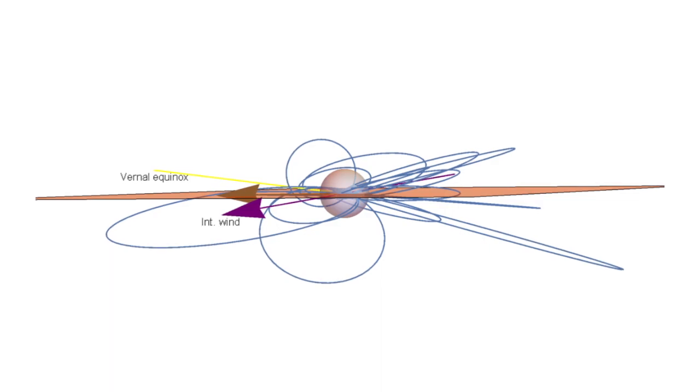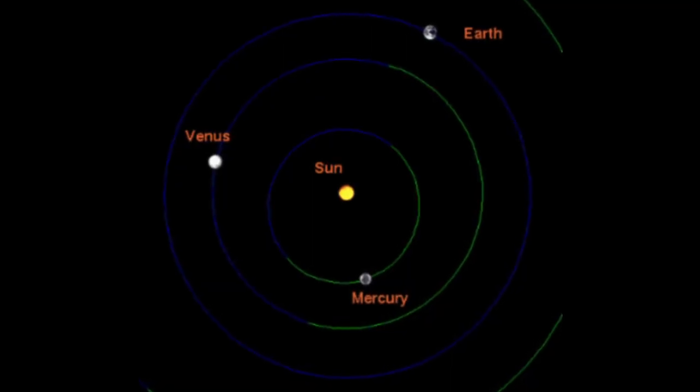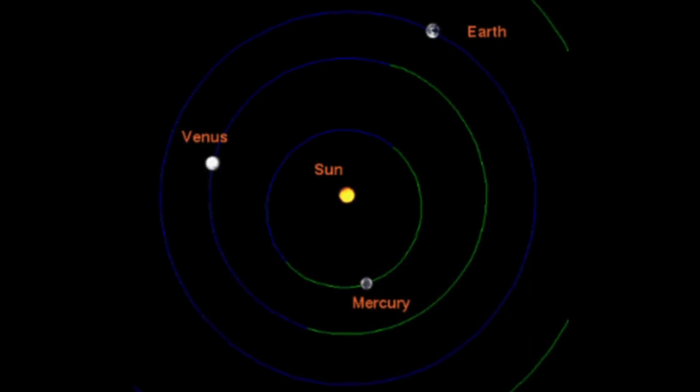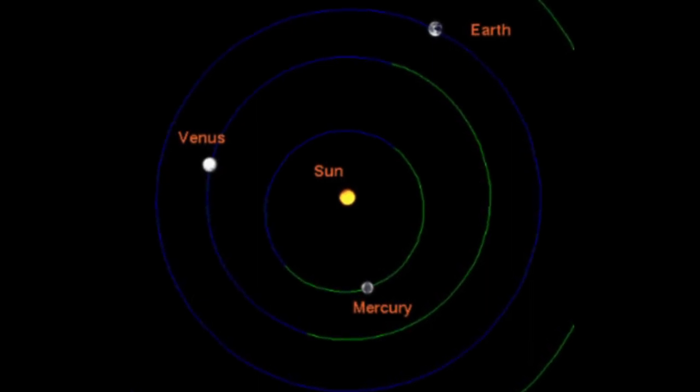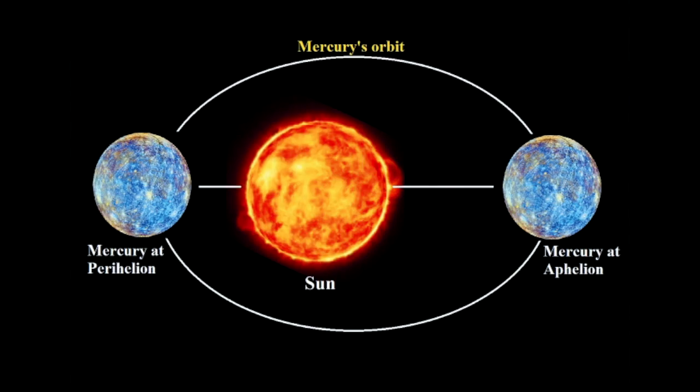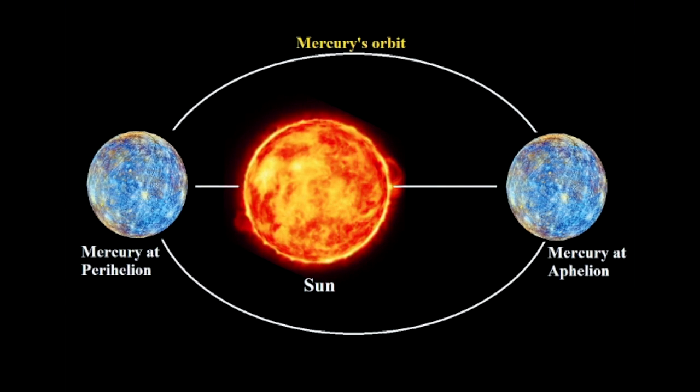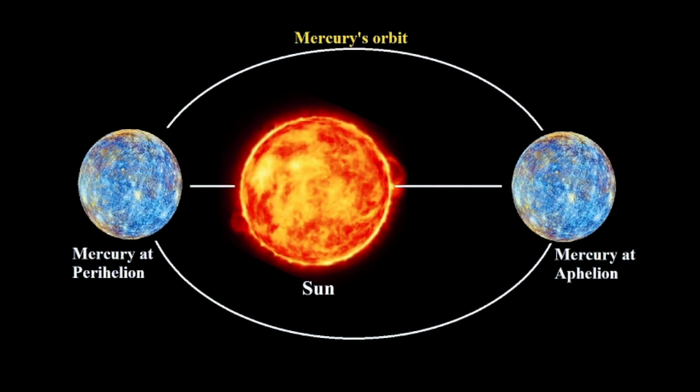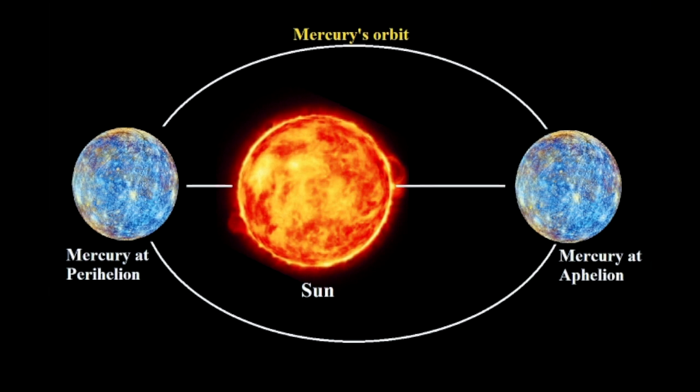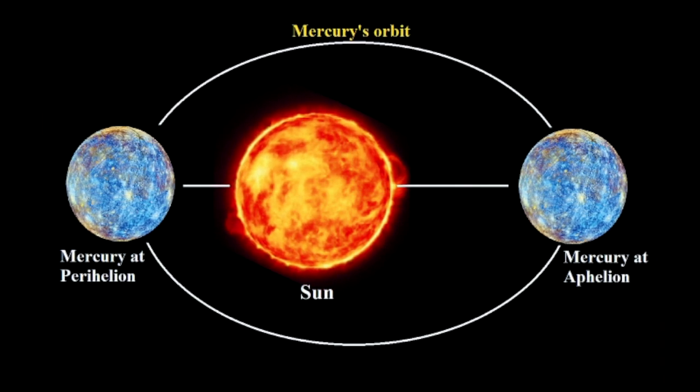And even that is not all. The orbit of the closest planet to the Sun, Mercury, has its semi-major axis pretty well aligned with the same direction. Mercury's perihelion is at 77 degrees longitude, only 2 degrees away from the interstellar wind direction and the crossing line of the ecliptic and solar equator.